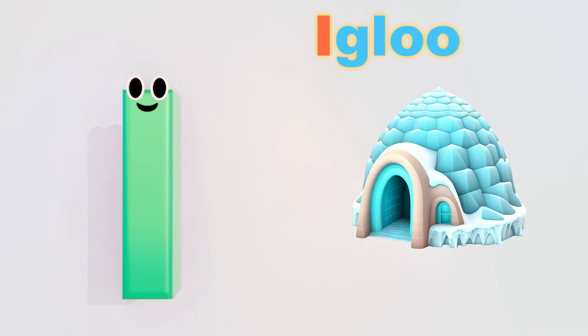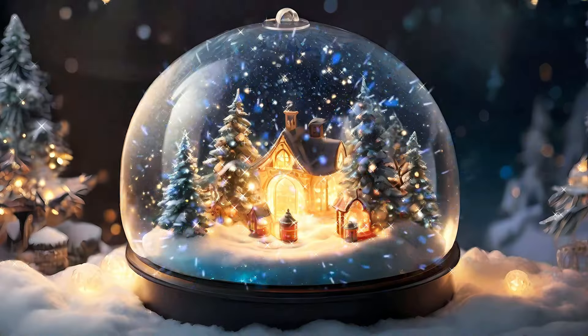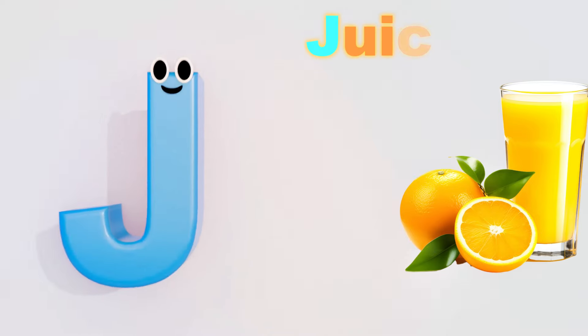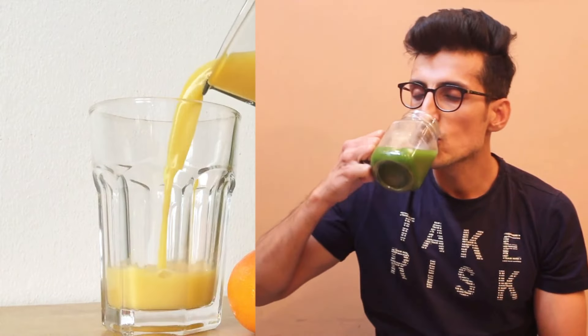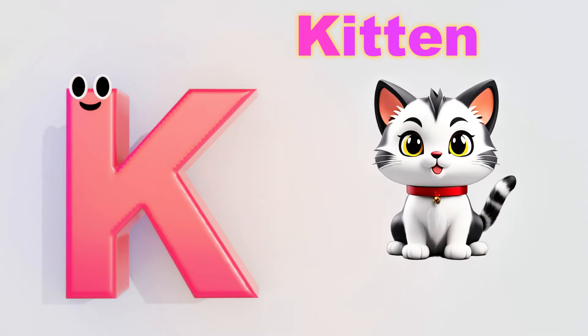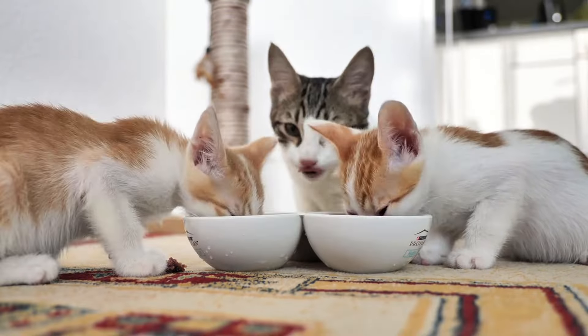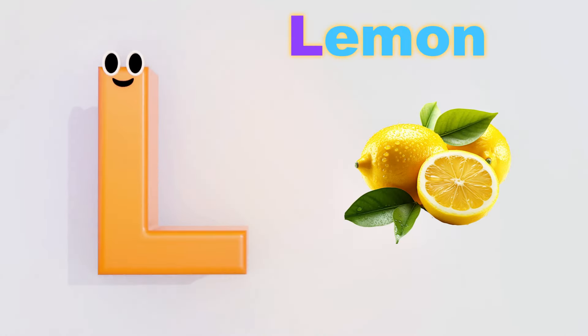I is for Igloo. I, I, Igloo. J is for Juice. J, J, J, Juice. K is for Kitten. K, K, Kitten.